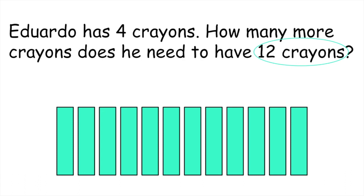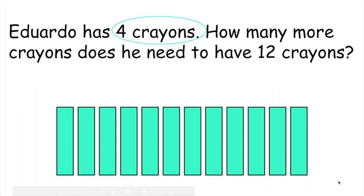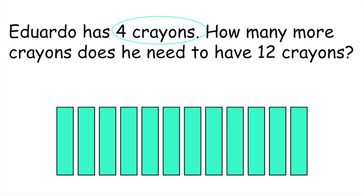But if I look back in our problem, Eduardo only has four crayons. So he needs to have 12, but he only has four. So we need to figure out how many more crayons he needs to have 12 crayons. What we can do is cross out the four crayons that Eduardo already has — one crayon, two crayons, three crayons, four crayons.